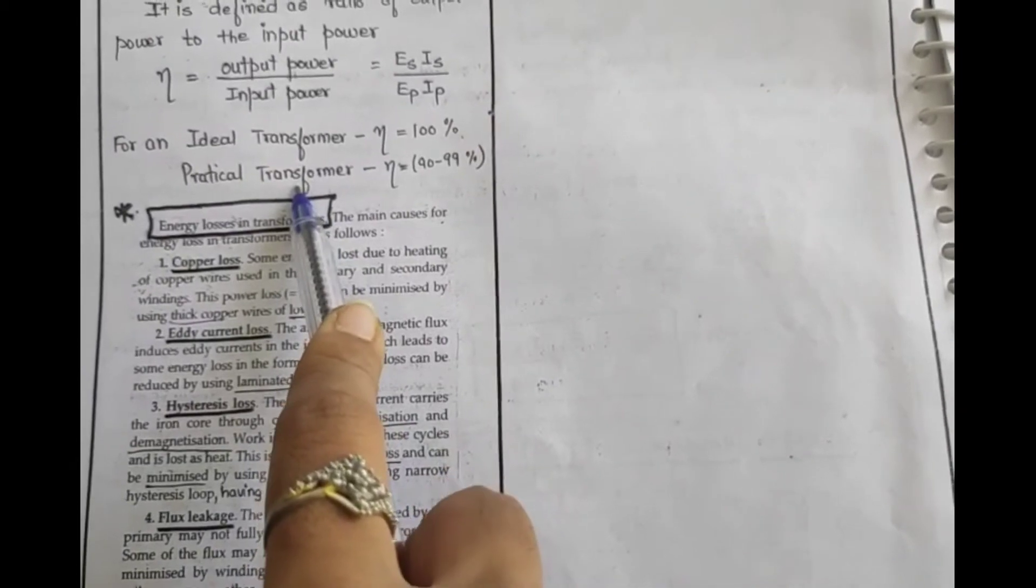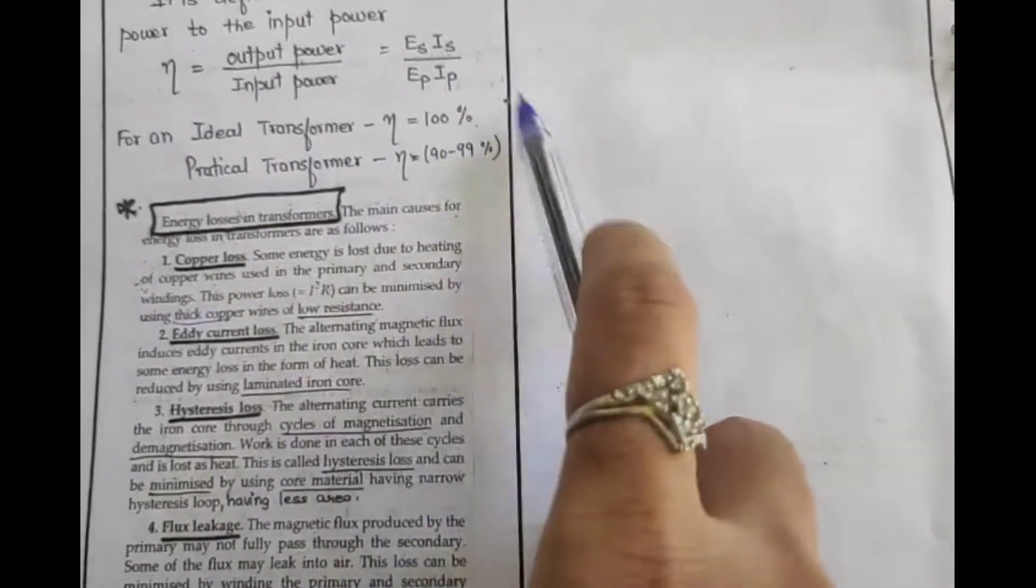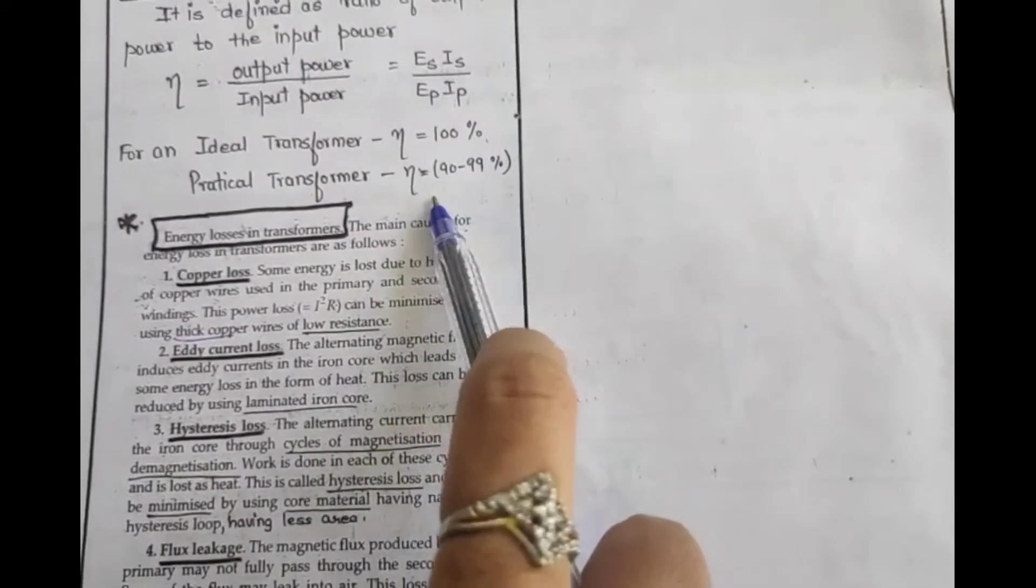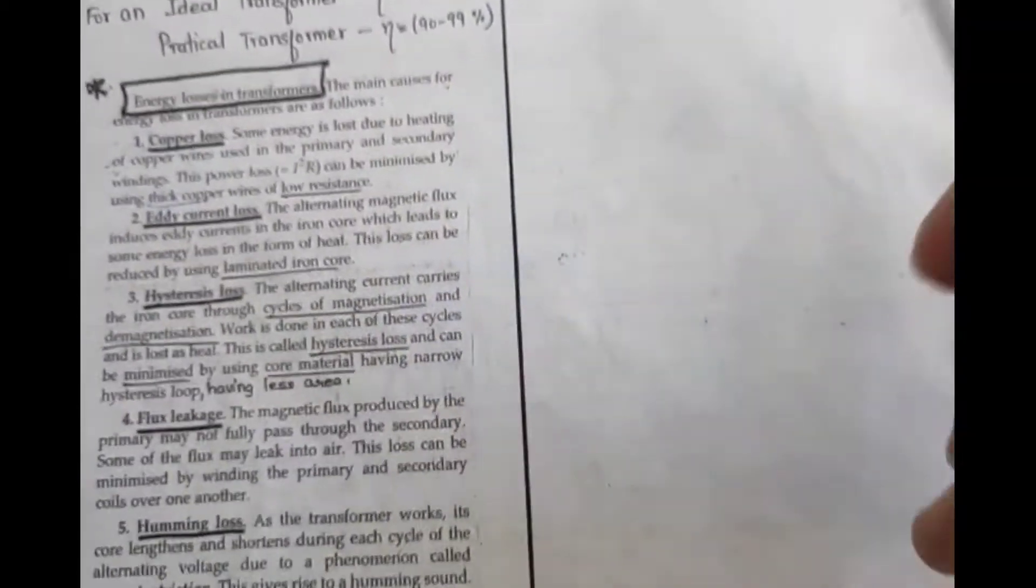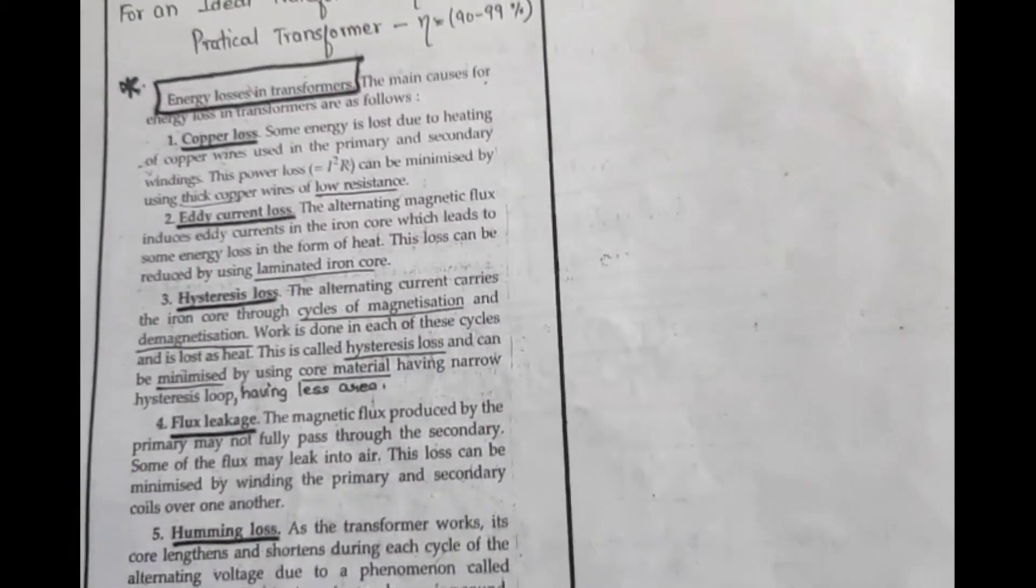But the transformers we use in practical life, their efficiency is less than 100%. What is the range? 92 to 99%.